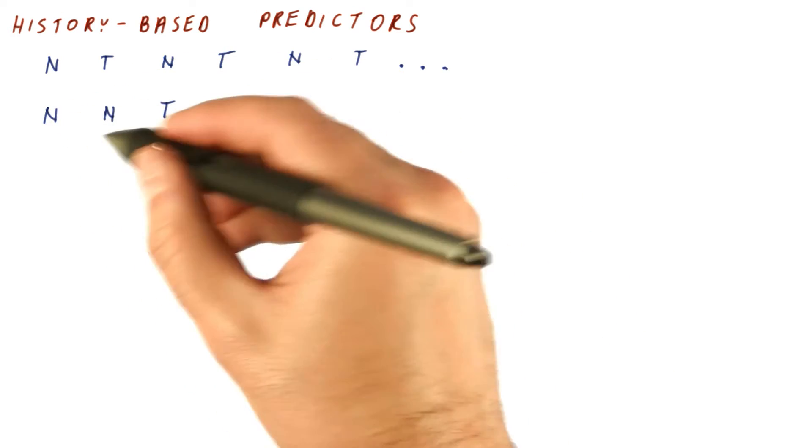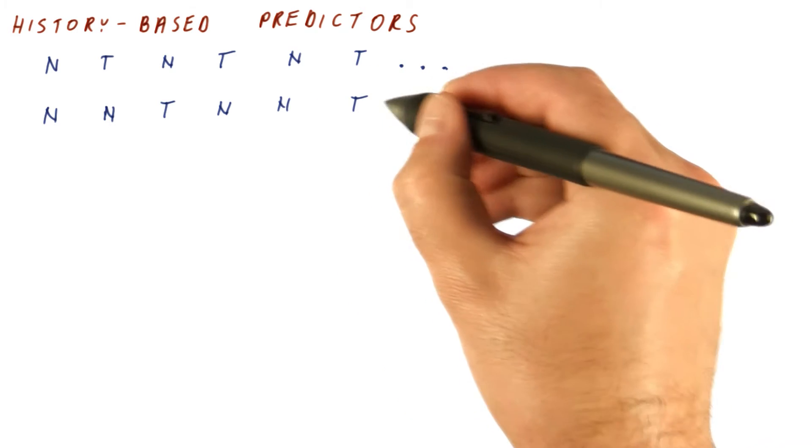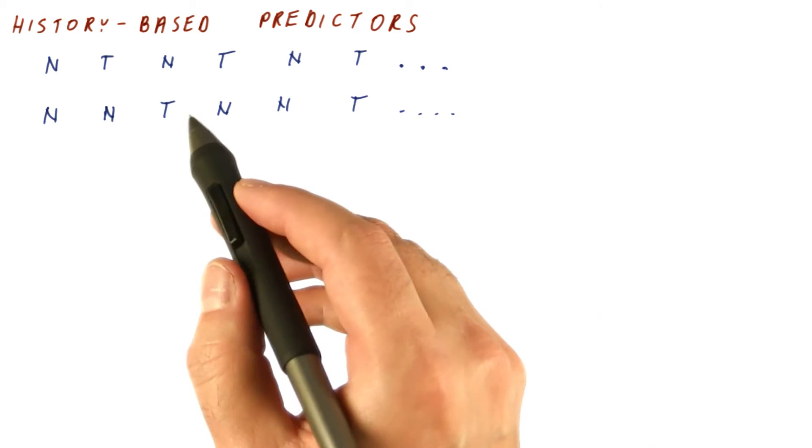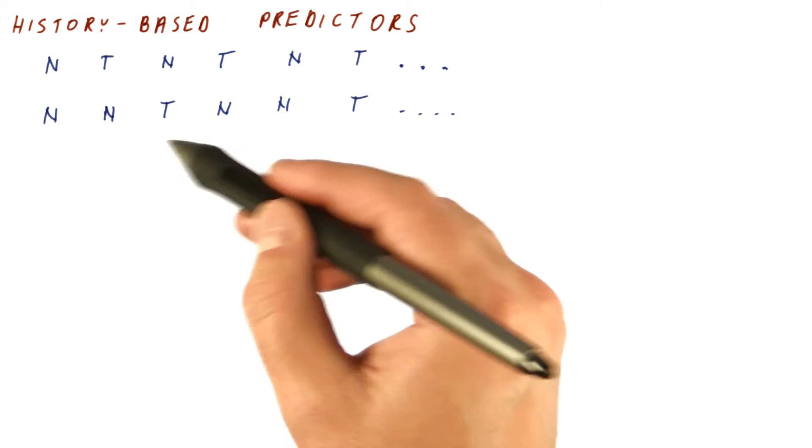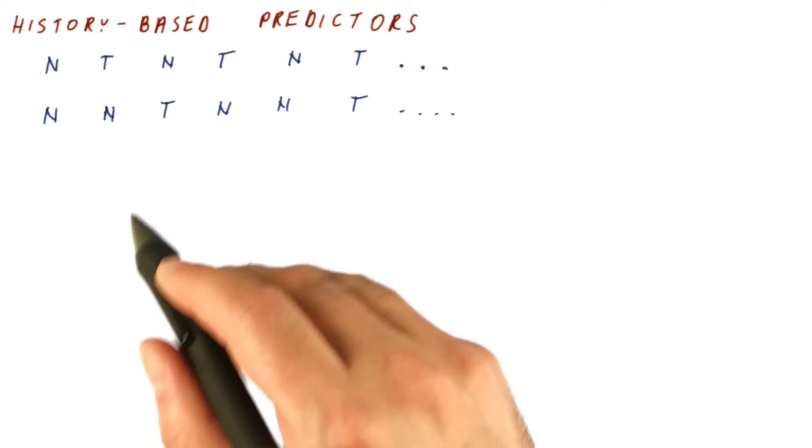Or something like two not takens followed by a taken, and then again two not takens followed by a taken, et cetera. Again, it's a repeating pattern that even a two-bit predictor will mispredict the taken branch, so it's one-third mispredicting. And even more complicated pattern-based things.